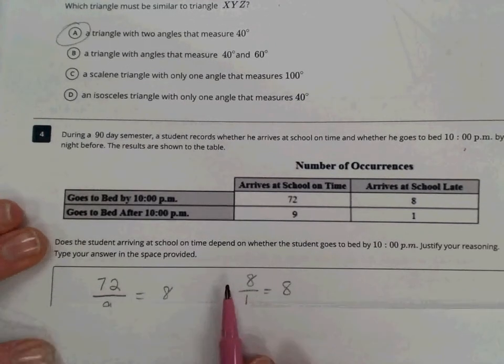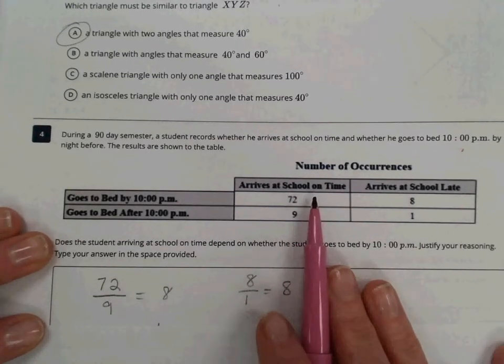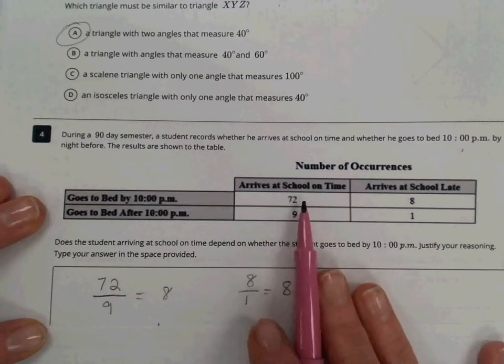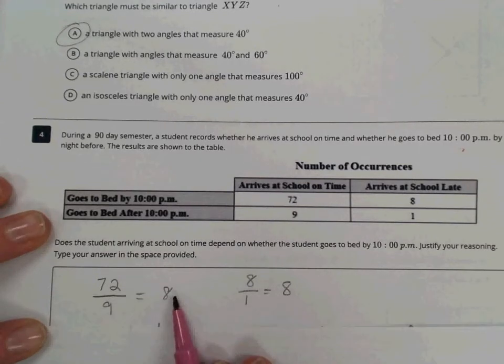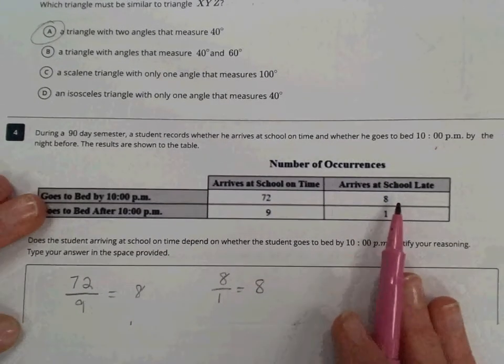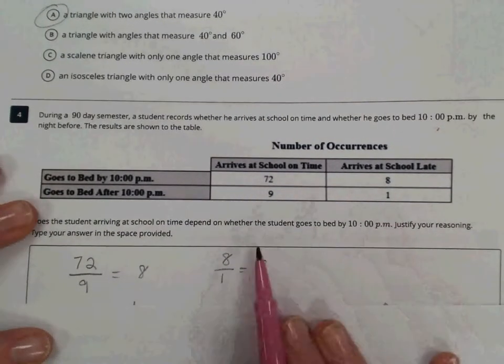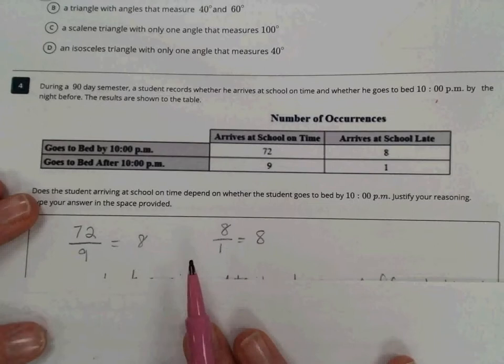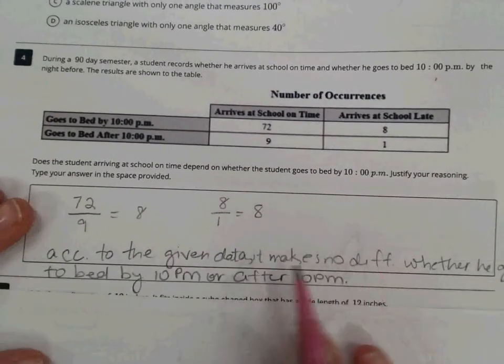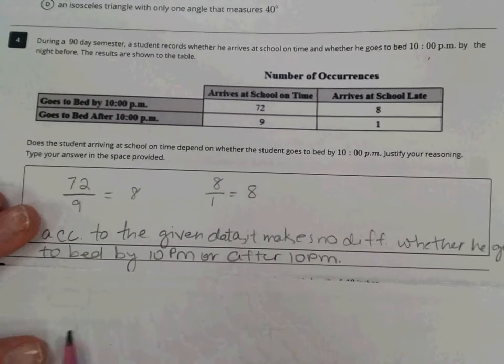So you see here that the student arrives, we're supposed to explain in the box the relationship there and justify our reasoning. So you can see I just decided to divide 72 by 9. If he arrives at school on time, the ratio of whether or not he went to bed by 10 or not would be 8. And then the same thing, I apply that same process to if he arrived late, did he go to bed by 10 or not? And each of those gives a ratio of 8. So therefore, we could say that these two events do not depend on one another. They are independent.